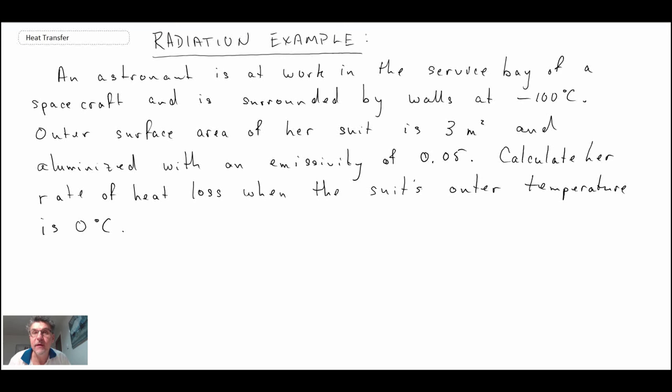So what we have, we have an astronaut sitting and working in the service bay of a spacecraft. And we're told that the astronaut is surrounded by walls at minus 100 degrees Celsius. And the area of the space suit of the astronaut is 3 square meters, emissivity is 0.05. And we're asked to calculate her rate of heat loss when the suit's outer temperature is 0 degrees C. So she would obviously be at a warmer temperature and then there's conduction going through the suit. But the outer temperature of the suit is at 0 degrees Celsius.